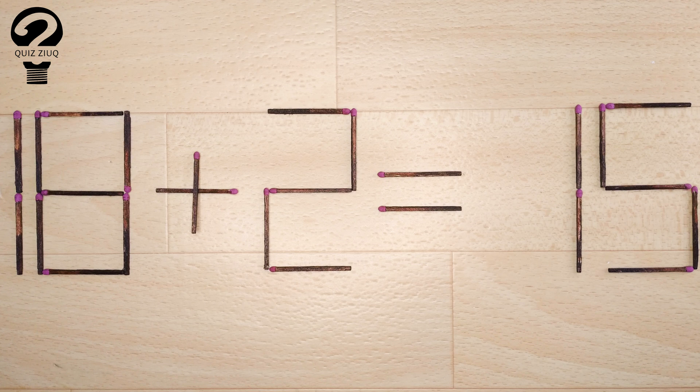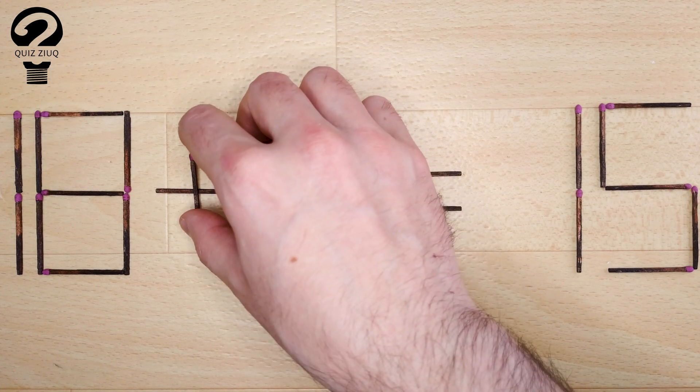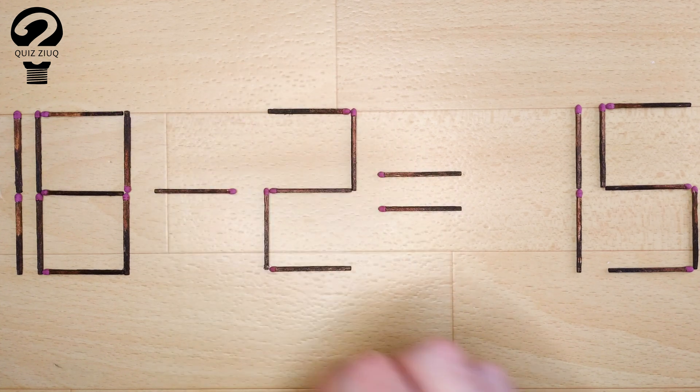How is this little puzzle solved? We just need to move one matchstick. And now, when we check: 18 minus 2 equals 16.